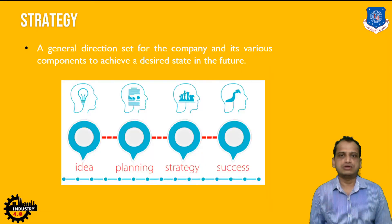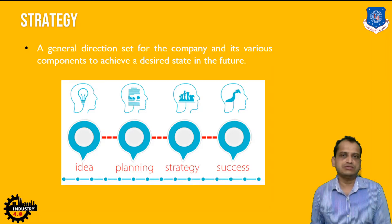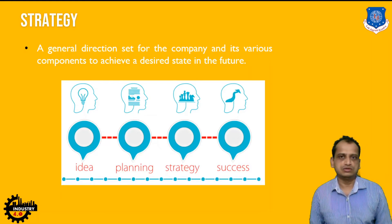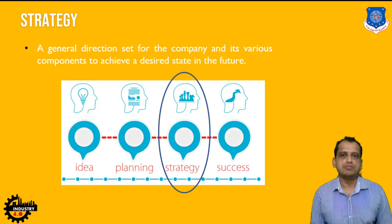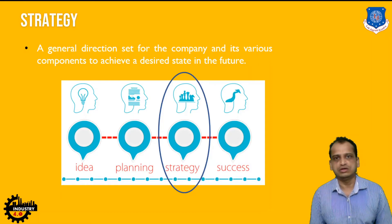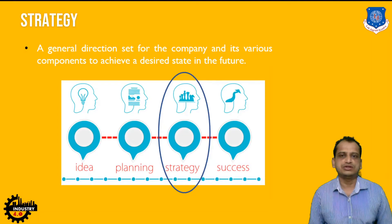In the ideation phase, the company will start with the idea phase, concept phase, and conceptualization. From conceptualization, the company will plan about resources — resource planning and allocation of resources. After that, the company will look into the strategy phase, setting directions for the components so that the company will attain the goals in the near or long-term future. That is the broader definition of strategy.